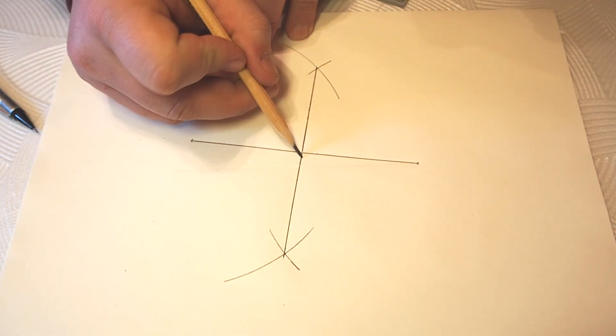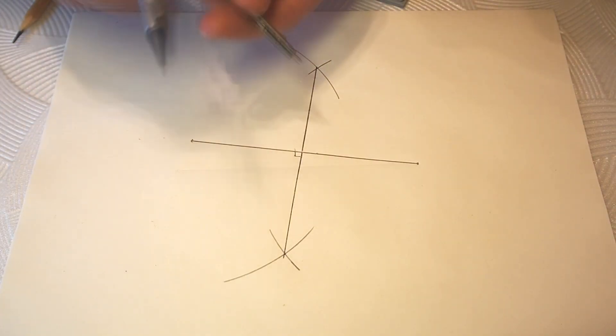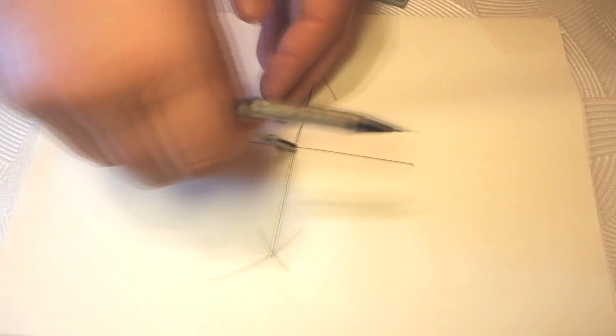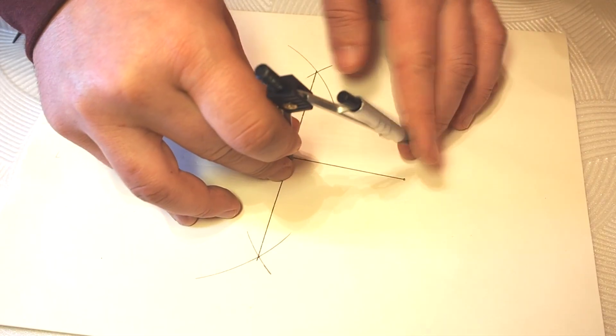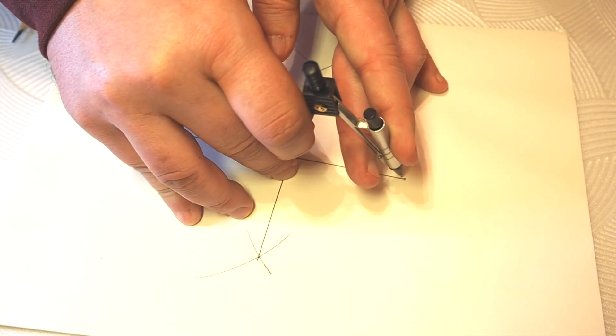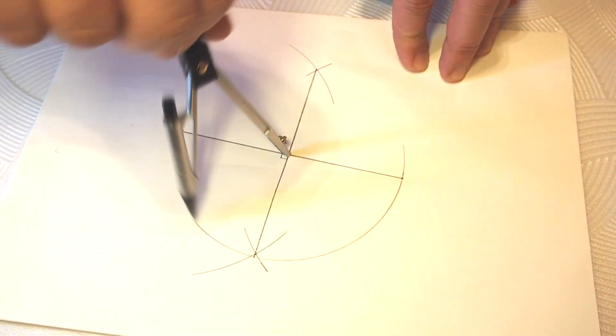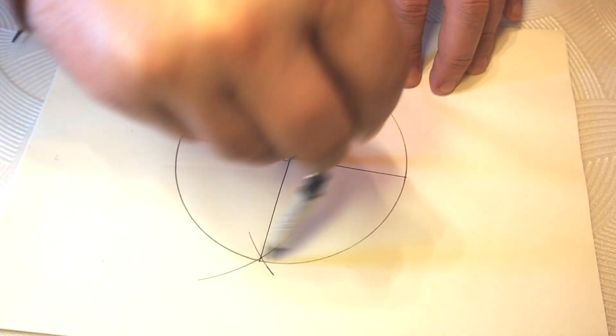Now we need to draw a circle using a compass to keep on with the star. You are free to choose any radius without sticking to the lengths of your line. As you can see, my radius is the half of the straight line, just as an example. Here is the circle.